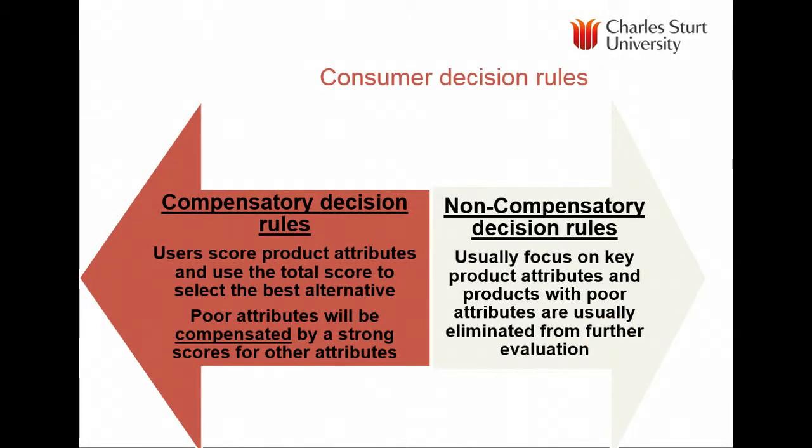When consumers make decisions, there are two ways they combine information. They may use a compensatory rule, where a summated score is calculated — like the attitude model — so poor attributes in one area, such as comfort in a car, may be compensated by other factors like good economy or low repair costs. A non-compensatory rule means there are key cutoff attributes, and this is usually used to reduce many alternatives down to a small number, after which a compensatory rule is applied to make the final decision.